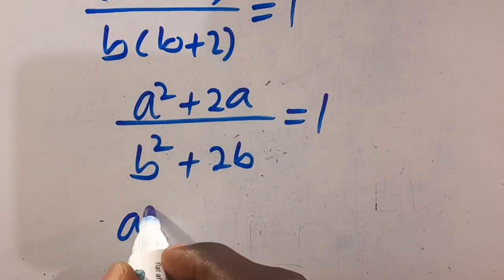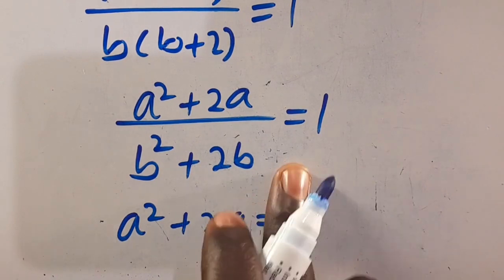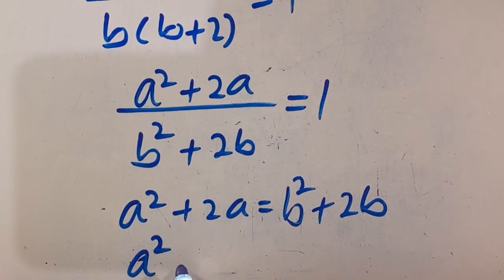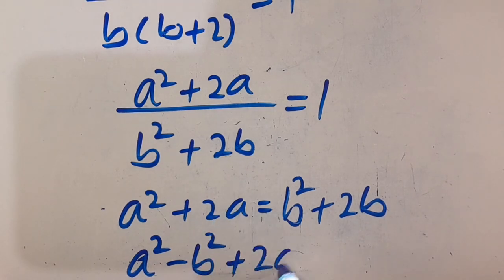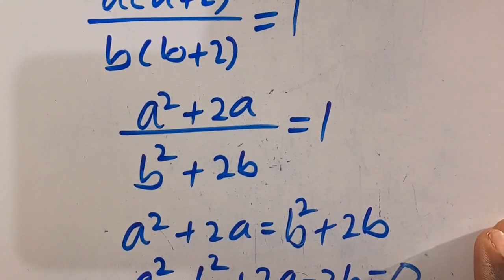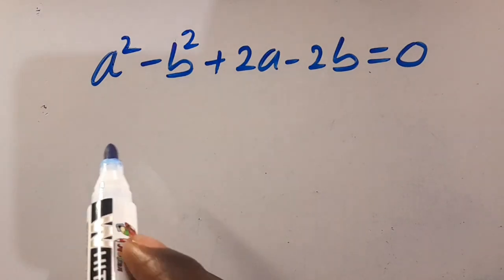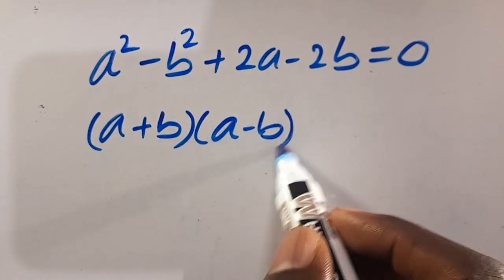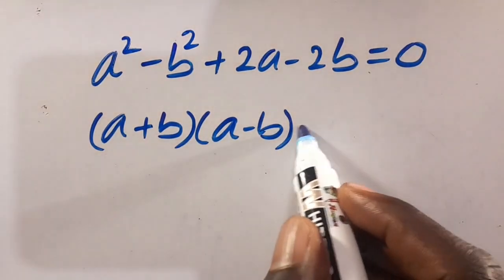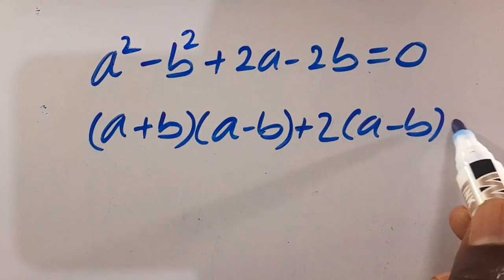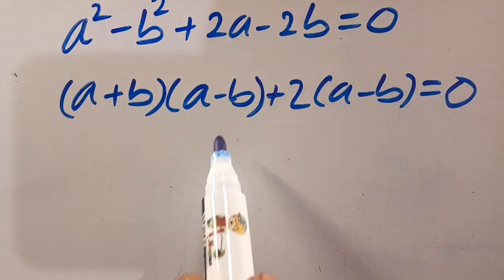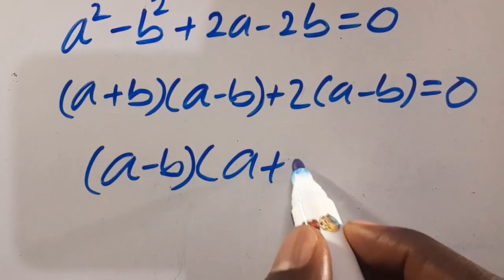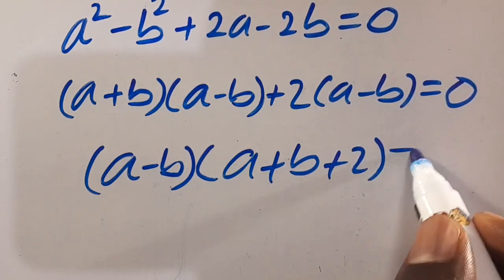Here we now have a squared plus 2a equals b squared plus 2b. Rearranging: a squared minus b squared plus 2a minus 2b equals 0. This is the difference of two squares, so we can simplify as (a plus b)(a minus b) plus 2(a minus b) equals 0. Since (a minus b) is common, we factor: (a minus b)(a plus b plus 2) equals 0.